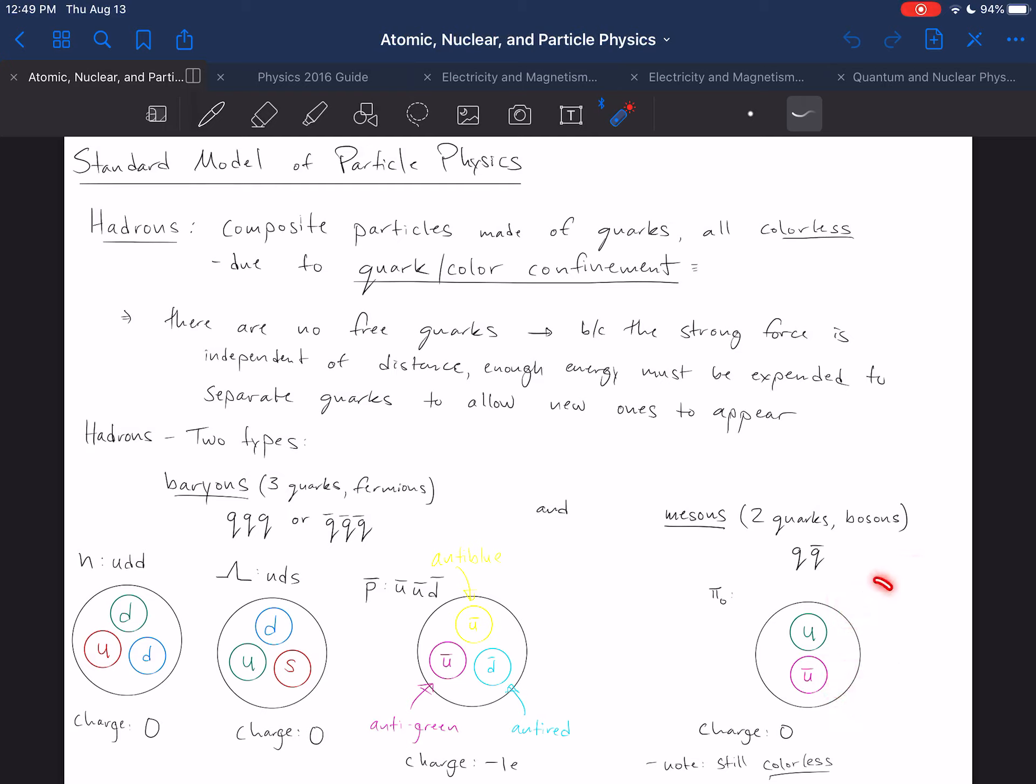Now the particle I'm showing right now involves up and its anti-particle, an anti-up, but you can also have a meson that is, for example, an up and an anti-down. The important ingredient is that the anti-particle has an anti-color of the particle itself. So, these are made of two quarks. They are bosons.